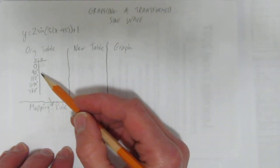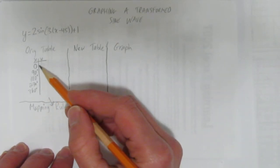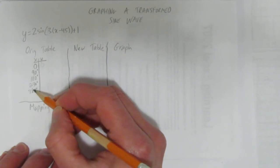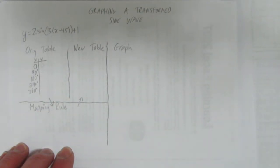So, we'll make an original sine table. We'll do one full cycle starting at 0 and then 90, 180, 270, 360. That's the full cycle of a sine wave.